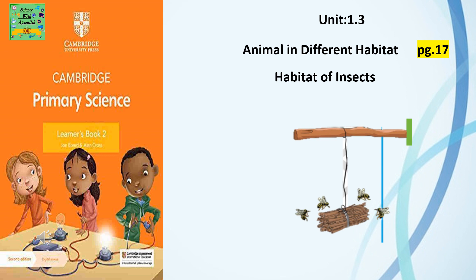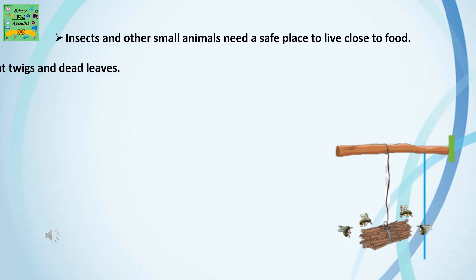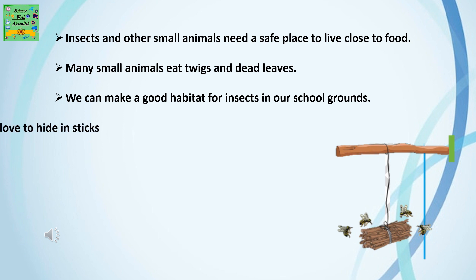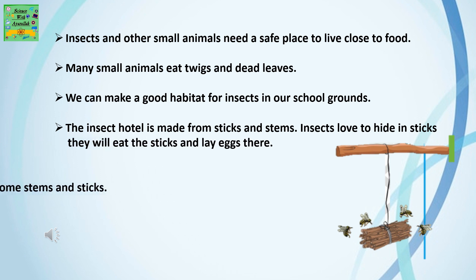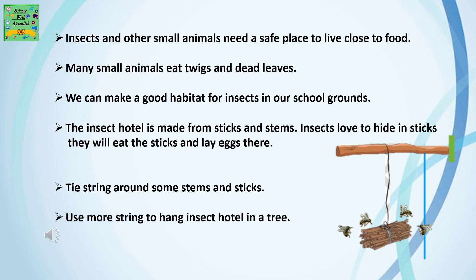Unit 1.3: Animals in Different Habitats — Habitat of Insects. Insects and other small animals need a safe place to live, close to food. Many small animals eat twigs and dead leaves. We can make a good habitat for insects in our school grounds.